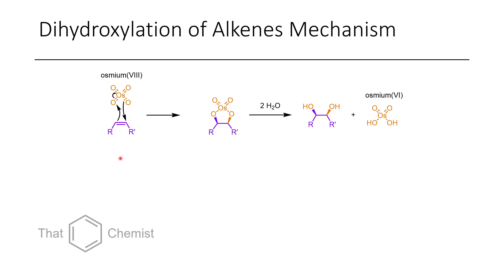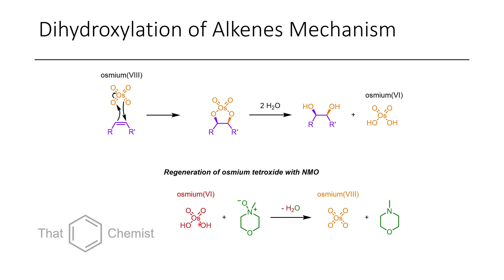The mechanism of this reaction is a 3+2 cycloaddition, where osmium tetroxide adds across the alkene to form a five-membered ring, which is then hydrolyzed to give the diol. Osmium(VIII) is reduced to osmium(VI), and through a subsequent step where osmium(VI) reacts with N-methylmorpholine oxide (or whatever oxidant is being used), it is converted back into osmium(VIII), along with N-methylmorpholine through the loss of water.